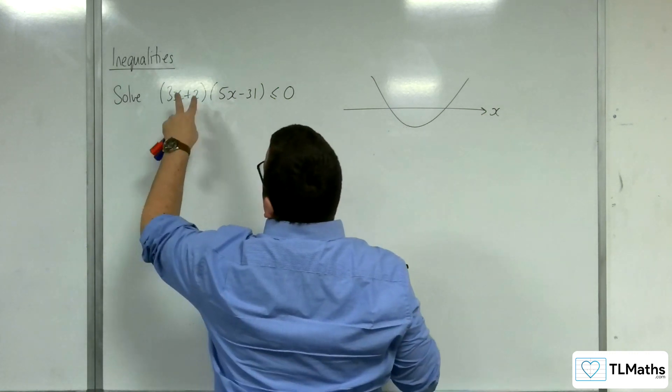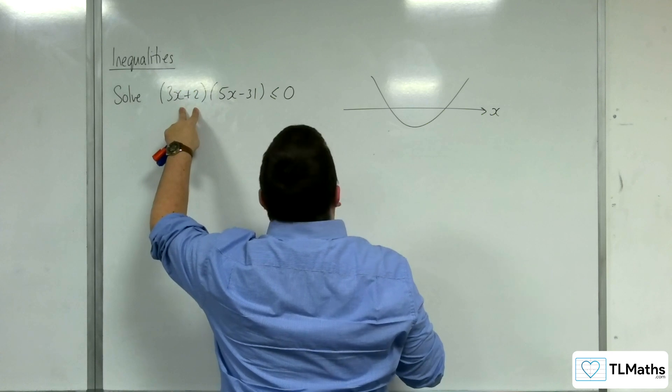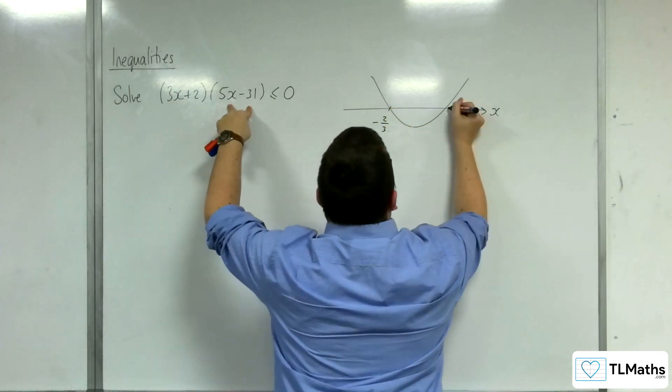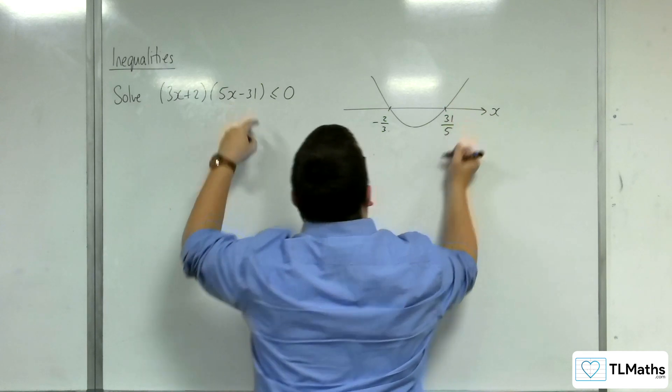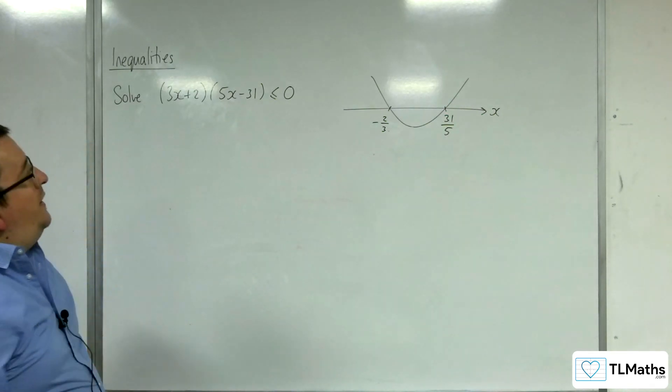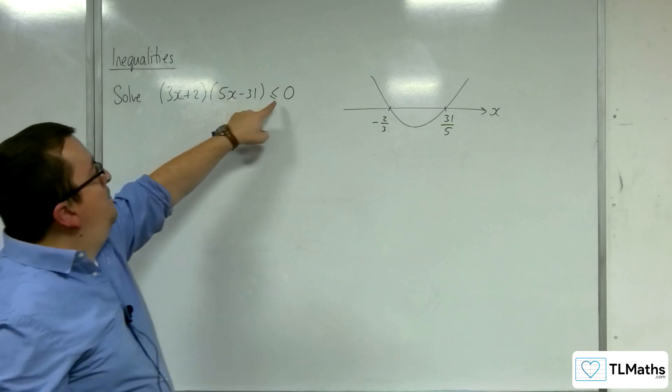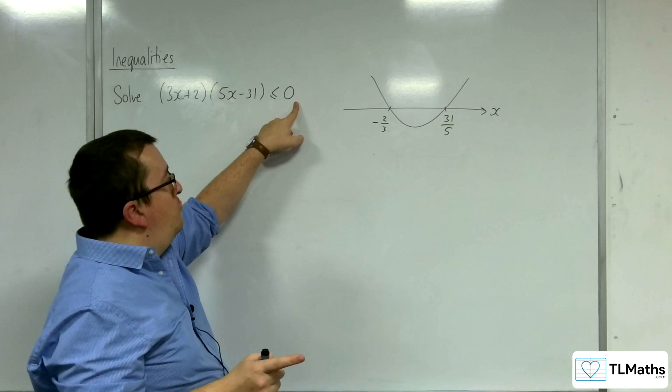So we've got minus 2 thirds there, and we've got 31 fifths there. And then what is the inequality asking? Where is the graph below or equal to 0?